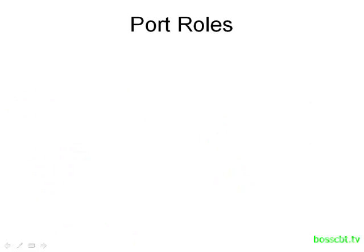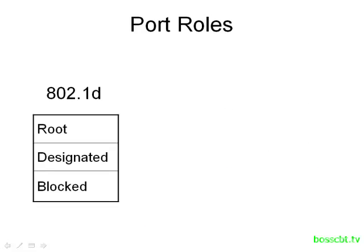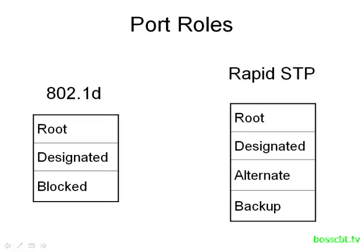There are also differences in the port roles between Standard and Rapid Spanning Tree. Standard Spanning Tree has the root, designated, and blocked port roles. Rapid Spanning Tree also has the root and designated roles. However, it's taken the blocked role from Standard and split it into two different types, known as the alternate and the backup. The alternate and the backup are still blocking, but they do it in a different way and in different scenarios.